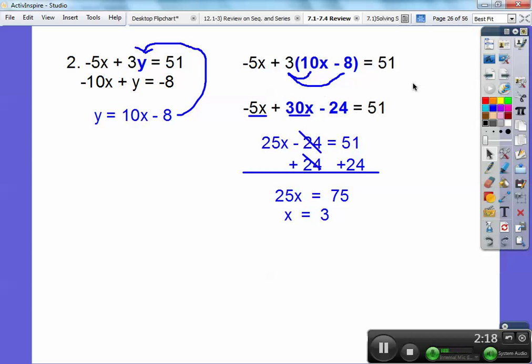Okay, go ahead and plug in x equals three right there. So 10 times three minus eight. And you get 30 minus eight, which is 22. So x always comes first, three comma 22.